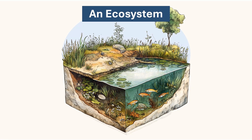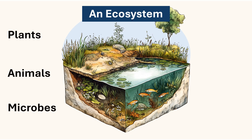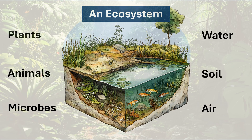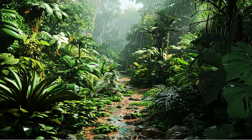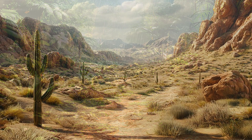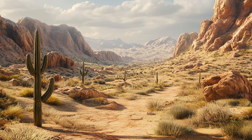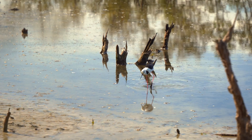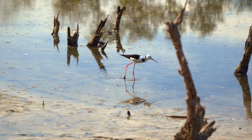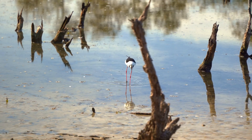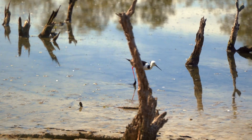An ecosystem is a community of interconnected living organisms, such as plants, animals and microbes, and their physical environment, such as water, soil and air, interacting with each other. Ecosystems can be vast, like the Amazon rainforest, a desert or a lake, or as small as a tide pool. Each ecosystem is a web of life that thrives on the exchange of energy and nutrients.